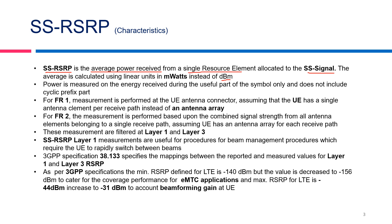This power is measured on the energy received during the useful part of symbols, and it does not include the cyclic prefix, which is an overhead of the symbol. For FR1, which covers low frequencies, the measurement is performed at the UE connector, assuming the UE has a single antenna per receive path instead of an antenna array. For FR2, which has higher frequencies or millimeter waves, this measurement is performed based on the combined signal strength received on all antenna ports, assuming the UE has an array of antennas on each receive path.